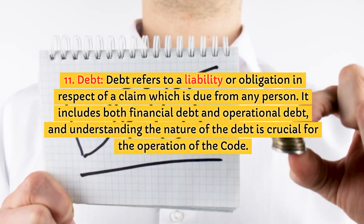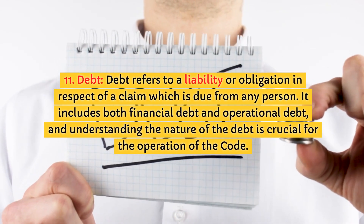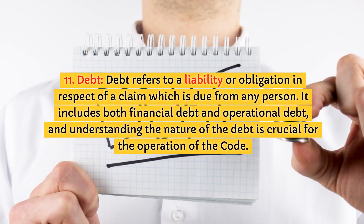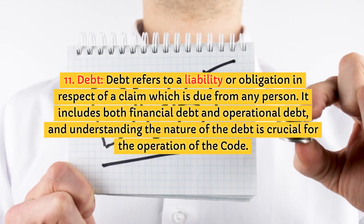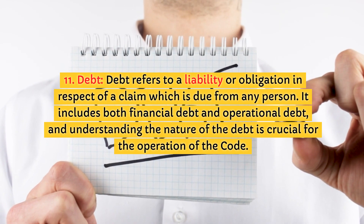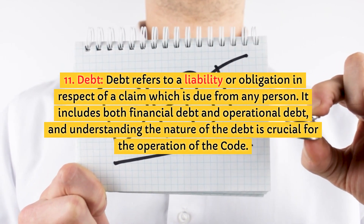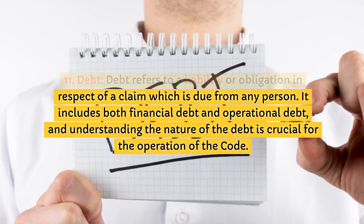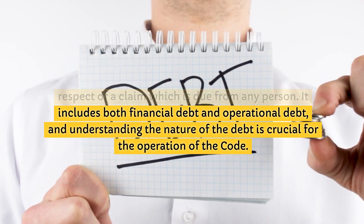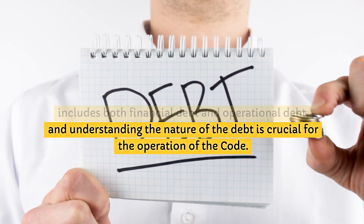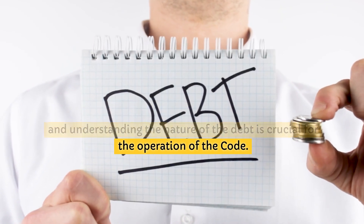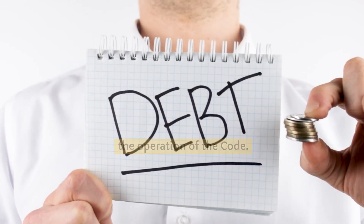11. Debt. Debt refers to a liability or obligation in respect of a claim which is due from any person. It includes both financial debt and operational debt, and understanding the nature of the debt is crucial for the operation of the code.